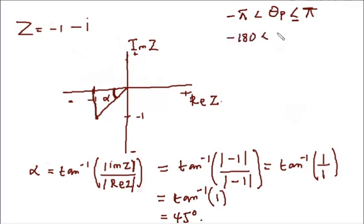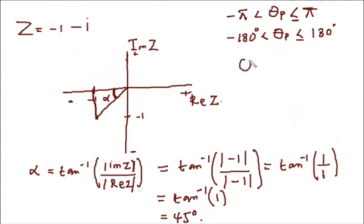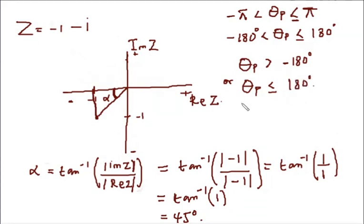If your angle is not within this range, it cannot be a principal argument. We interpret this as: theta_p has to be greater than minus 180 degrees, and theta_p has to be less than or equal to 180 degrees. From our Argand diagram, there are two ways we can measure theta_p.